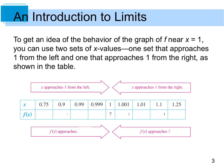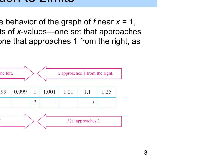To get an idea of the behavior of the graph of f near x equals 1, you can use two sets of x values — one set that approaches 1 from the left and one that approaches 1 from the right, as shown in the table. We can take these values and plug them in. There's a shortcut we can use in our calculator, which is where the calculator comes in handy.